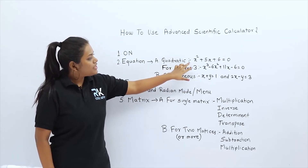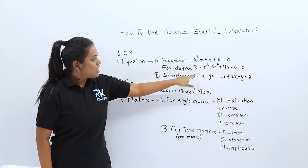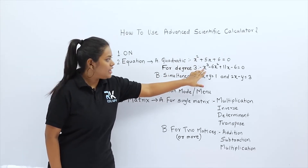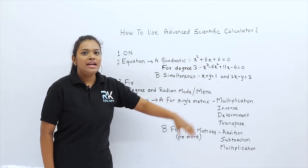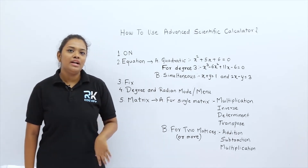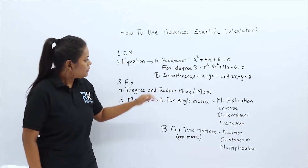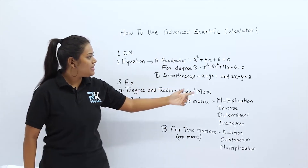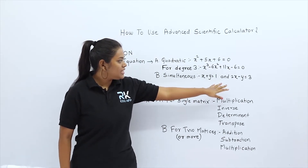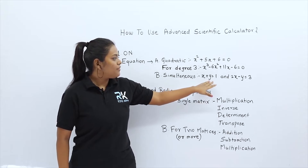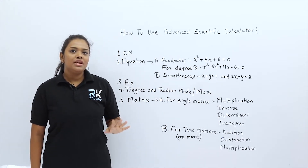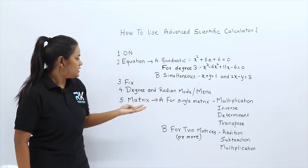In quadratic equations we have two equations: the first equation has degree 2 and the second has degree 3. On the advanced scientific calculator we can calculate up to degree 4. In simultaneous equations we have two equations and after solving them we get the values of x and y. Our calculator can solve up to 3 simultaneous equations.